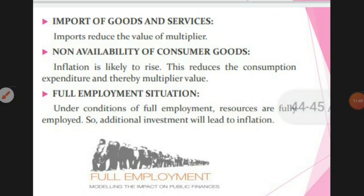Non-availability of consumer goods is another leakage: if supply does not meet demand, consumption reduces and inflation may occur, which also affects the multiplier. Finally, if there is full employment — meaning everyone is employed and has more money — inflation will occur, and this will also negatively affect the multiplier.